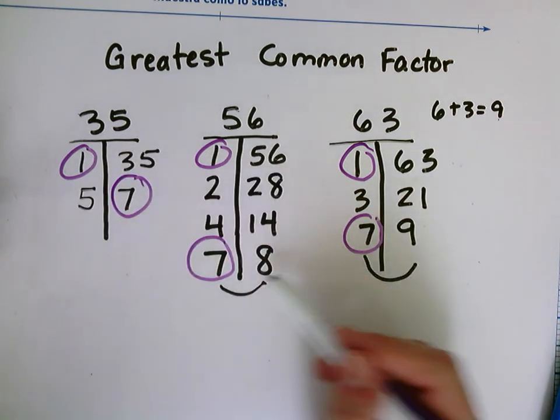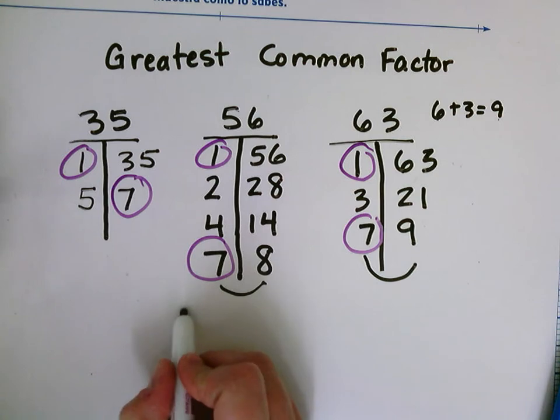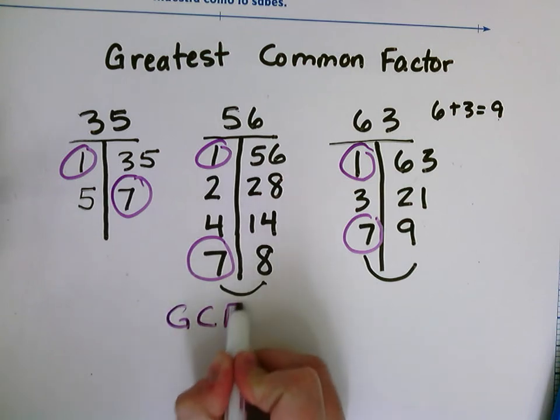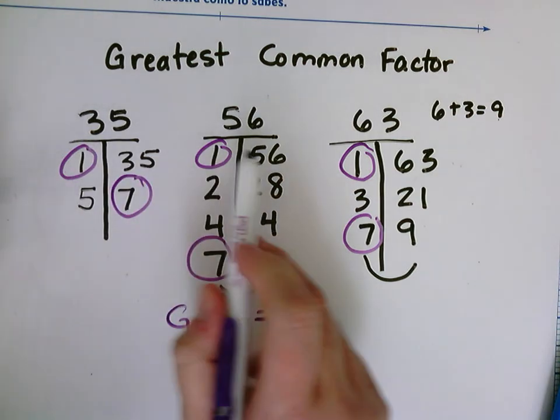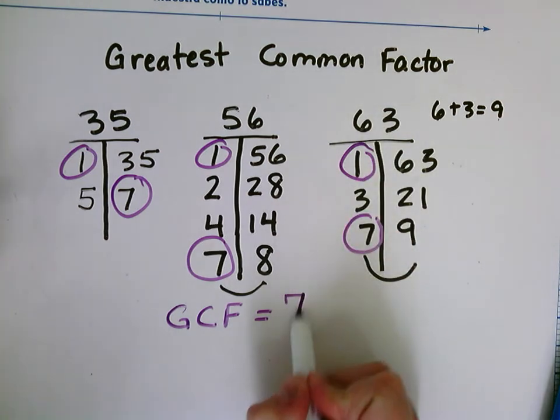And since there's no 35 on any other list, my greatest common factor for 35, 56, and 63 is 7.